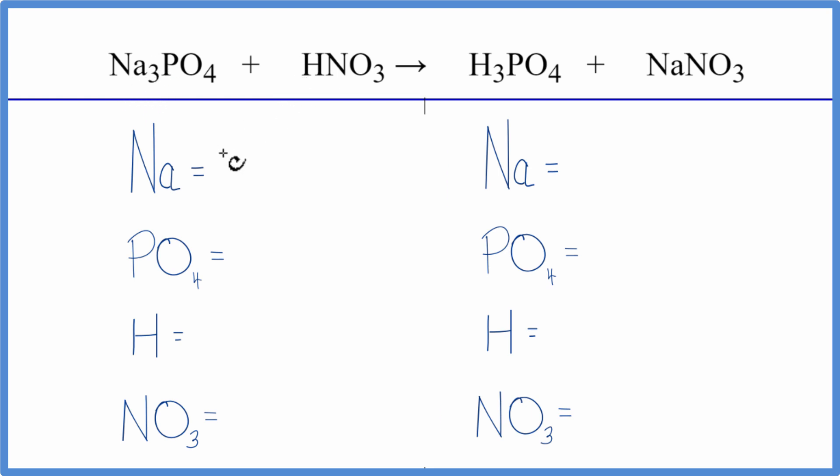We have three sodium atoms, and then we have a phosphate here and here. It stays together in the chemical reaction, so we can just count the phosphate as one thing because it shows up on both sides. We have the hydrogen, one of those. The nitrate again, this NO3, is a polyatomic ion. It's nitrate. We have it here, we have it here, so we can say we have one nitrate, one NO3.